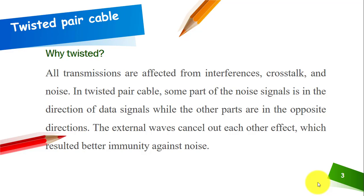The next question that must arise in your mind is: why are twisted pair cables twisted? Why are the two insulated copper wires twisted together? This is a very interesting question. All transmissions are prone to interference, crosstalk, and noise — where there is transmission, there must be noise, interference, and crosstalk.